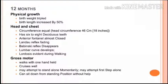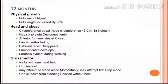For the one-year-old (12-month) child, key physical growth milestones are very important: birth weight is tripled, birth length is increased by 50%, head and chest circumference become equal, and the baby has six to eight deciduous teeth. The anterior fontanel is almost closed, Landau reflex is fading, and Babinski reflex disappears. Lumbar curve develops and lordosis becomes evident during walking.